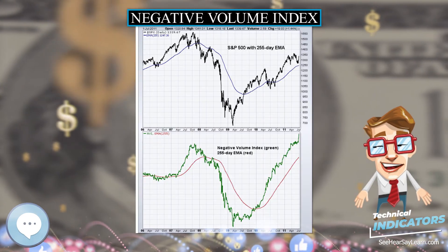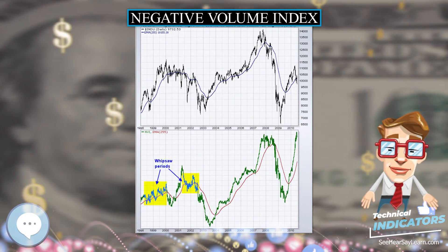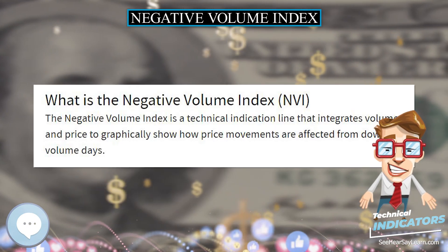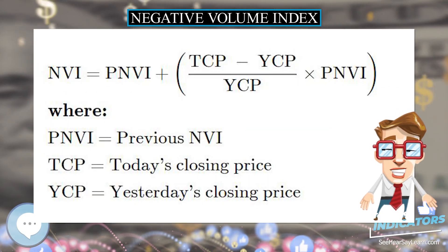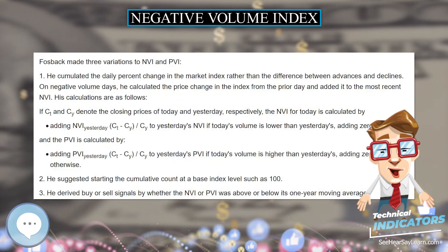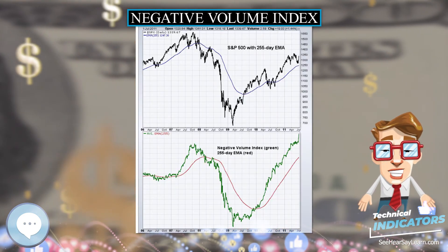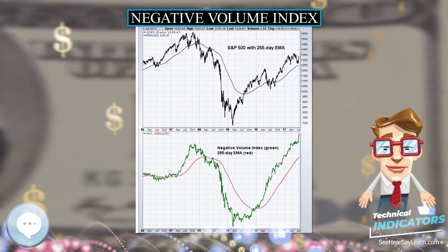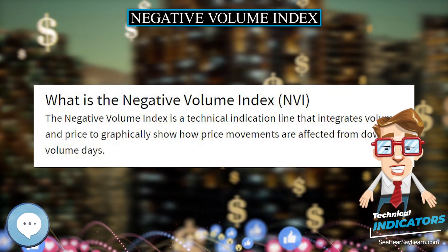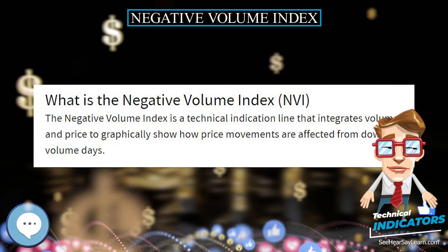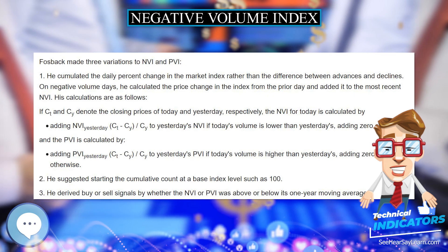Today, NVI and PVI are commonly associated with Fosback's versions, and Dysart, their inventor, is forgotten. It cannot be said that one version is better than the other. While Fosback provided a more objective interpretation of these indicators, Dysart's versions offer value to identify primary trends and short-term trend reversals. Although some traders use Fosback's NVI and PVI to analyze individual stocks, the indicators were created to track, and have been tested, on major market indexes. NVI was Dysart's most invaluable breadth index, and Fosback found that his version of the Negative Volume Index is an excellent indicator of the primary market trend. Traders can benefit from both innovations.